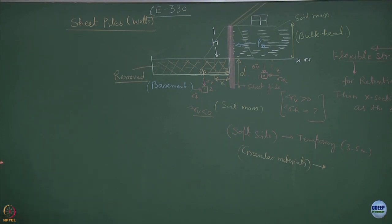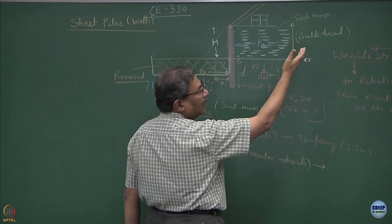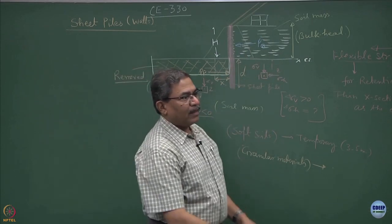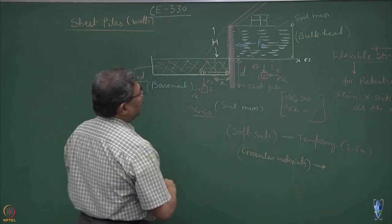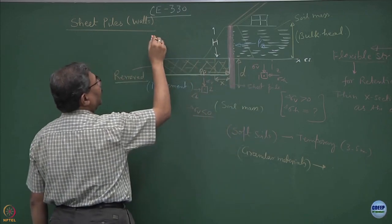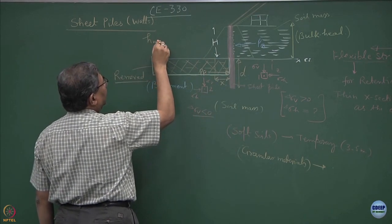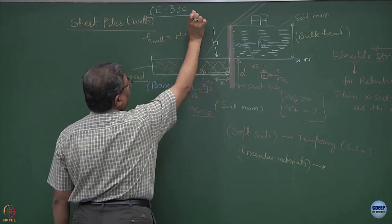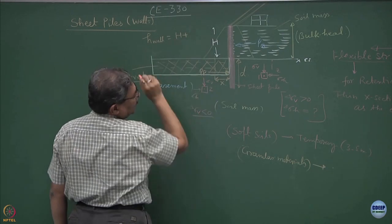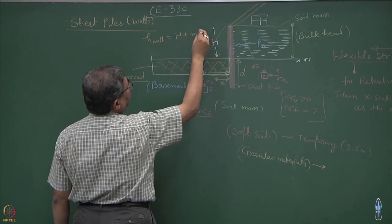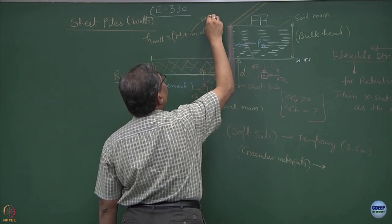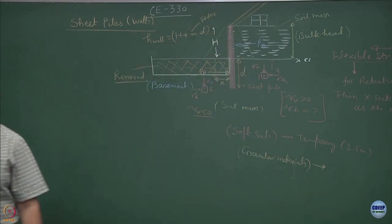What you require is the material property: the moment you know C, phi, and gamma, the drainage conditions, and submergence conditions, you can compute active and passive pressures — we have done enough analysis. The whole aim is to find out D, so that the total height of the wall equals H plus some factor M times D. This factor is something we will be discussing later. These are the basic concepts.